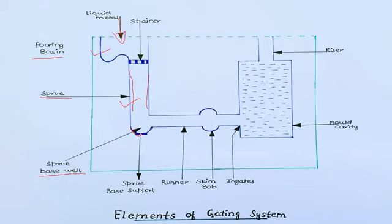The next element is the sprue base well, located at the bottom of the sprue. This is a reservoir for molten metal at the bottom of the sprue to reduce the momentum of the molten metal. It receives the molten metal from the pouring basin through the sprue, and from this sprue well the molten metal passes into the further sections of the gating system. The sprue base support is used to support the sprue base well.